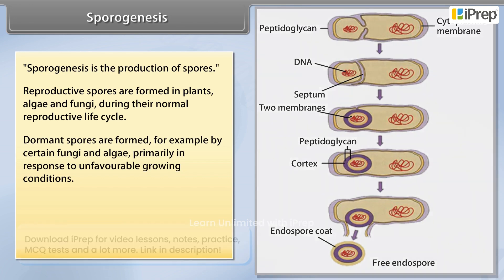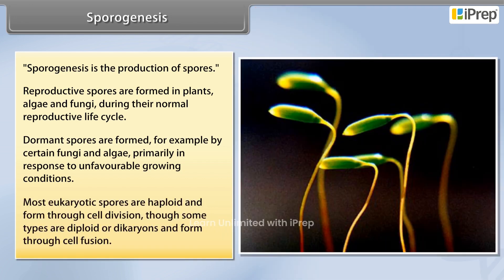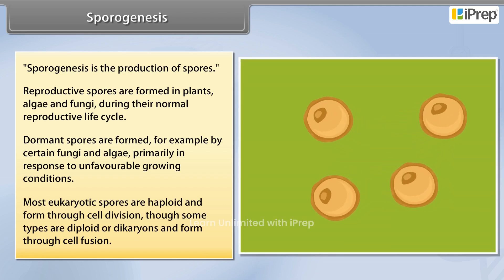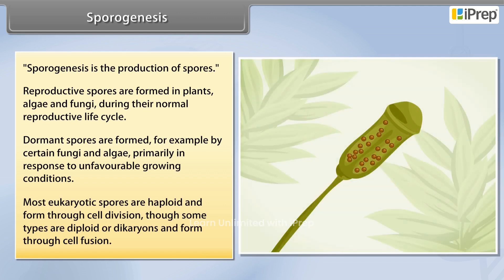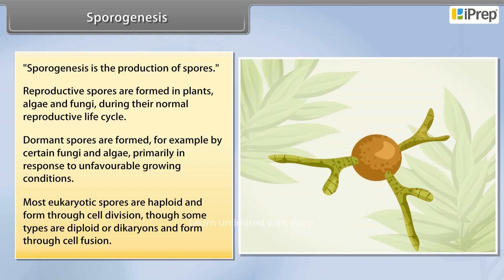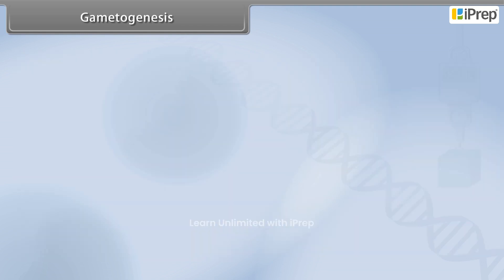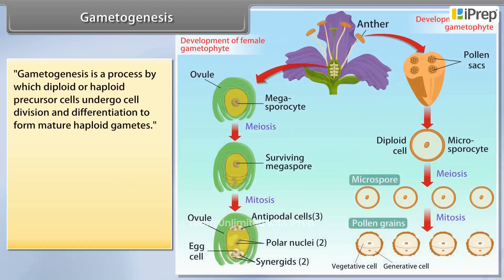Most eukaryotic spores are haploid and form through cell division, though some types are diploid or dikaryons and form through cell fusion. Gametogenesis is a process by which diploid or haploid precursor cells undergo cell division and differentiation.